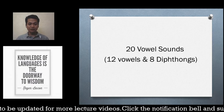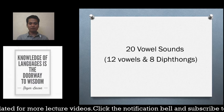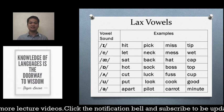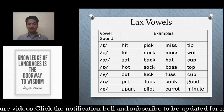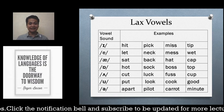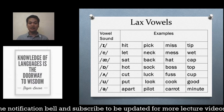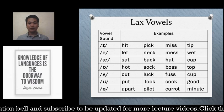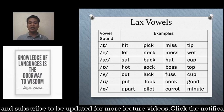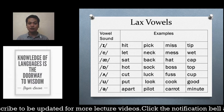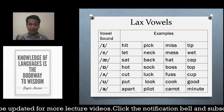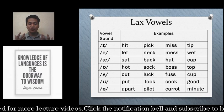Of those 44 sounds, we have 20 vowel sounds — 12 pure vowels and 8 diphthongs. Let's do some exercises with the lax vowels. In some books they are called short vowels, but technically the term is lax vowels. To enunciate sounds properly, you must open your mouth.